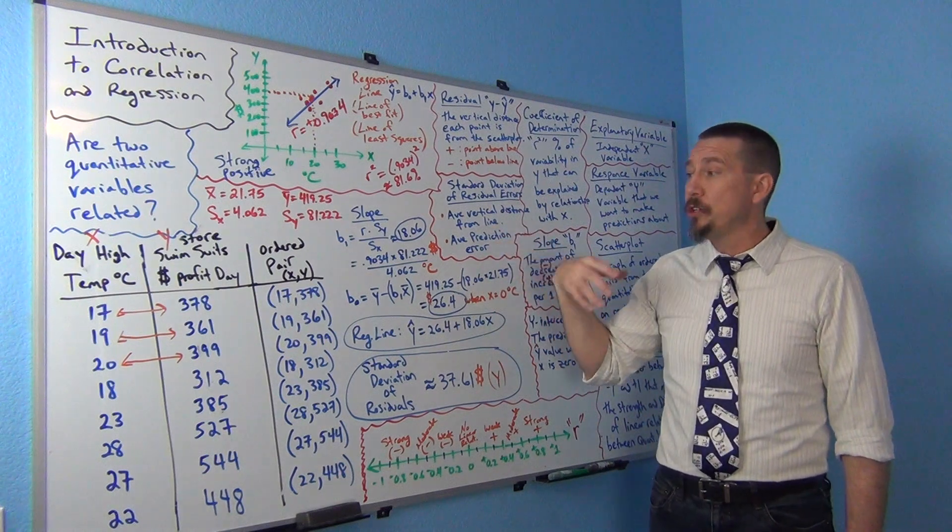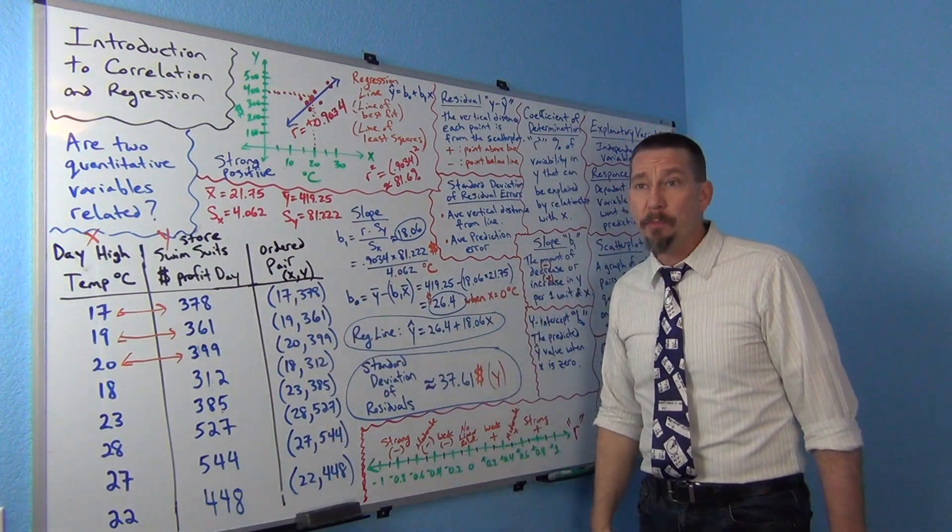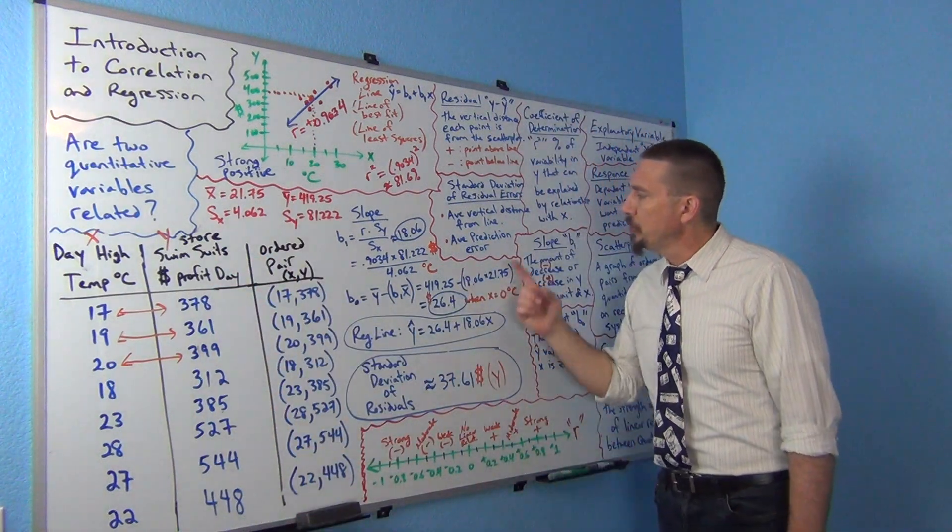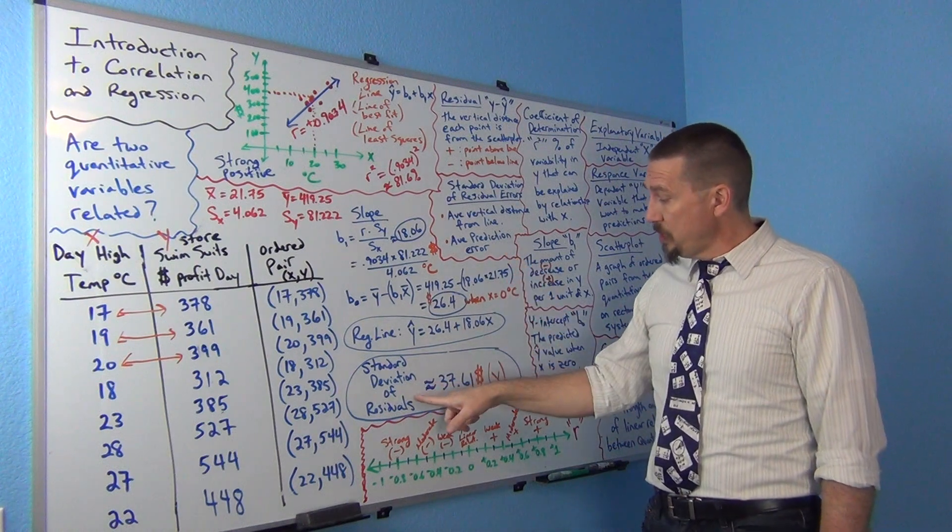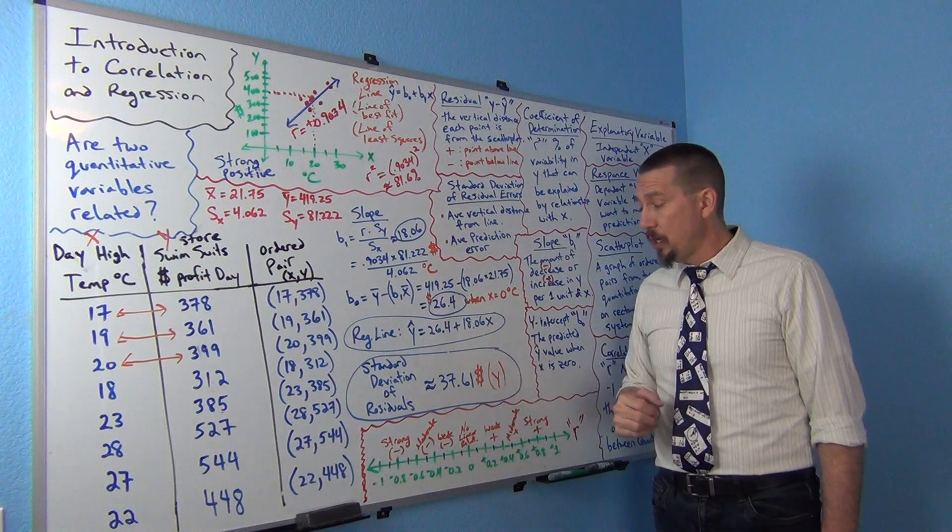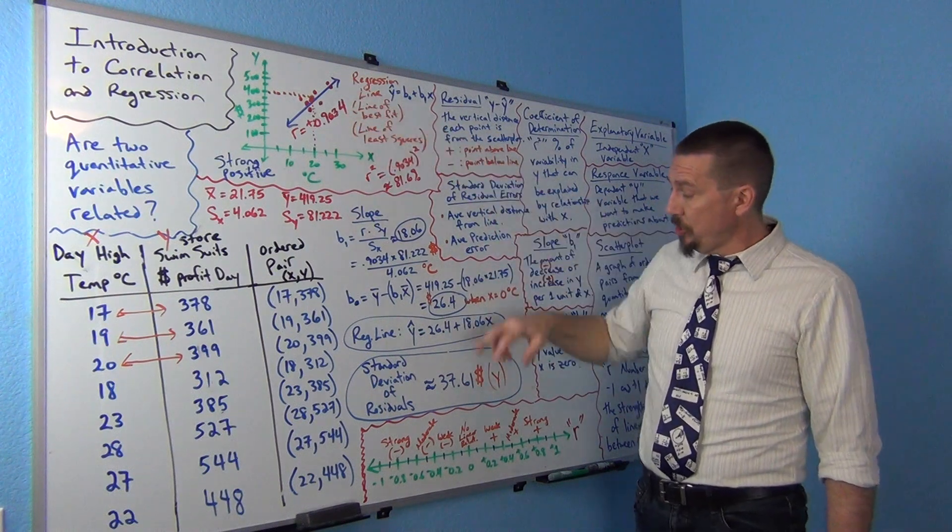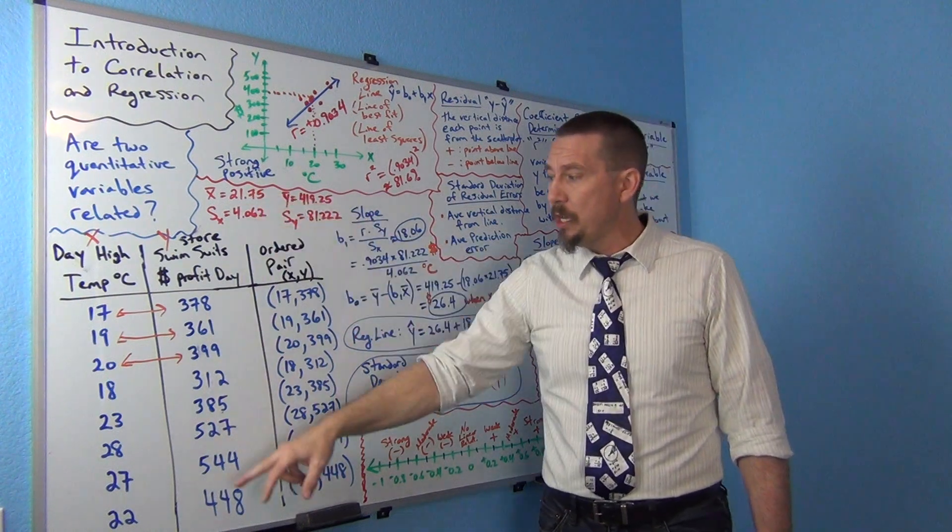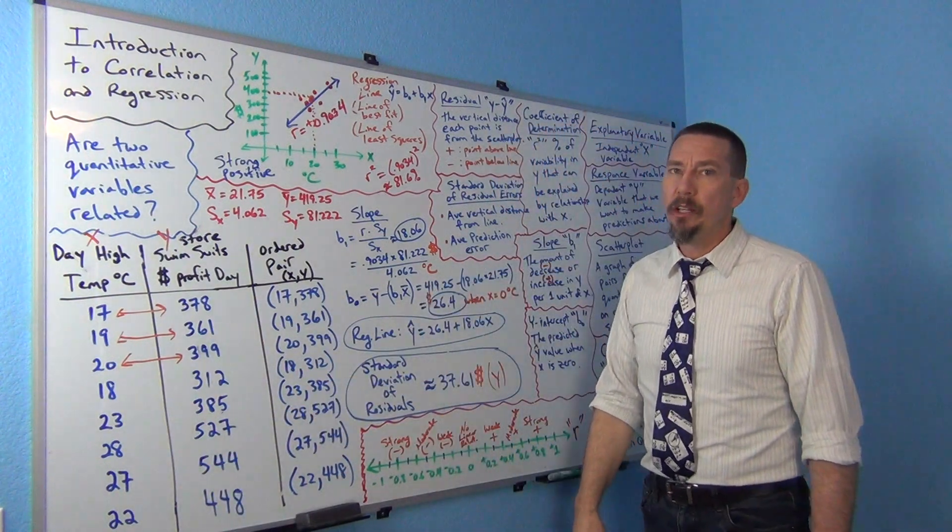Correlation regression studies often are used to make predictions, to predict what's going to happen. What do we think is going to happen in the stock market, or what do we think is going to happen for the profits of this company? Those are predictions. So this tells me how much error could be in those predictions. So standard deviation of residuals in this problem came out to 37.61 dollars or 37 dollars and 61 cents. The points on the scatter plot are on average 37.61 from the line. And if I try to predict the profits of the company based on the temperature, I could be off by about 37 dollars and 61 cents.